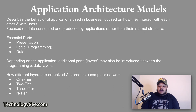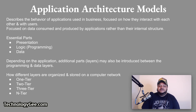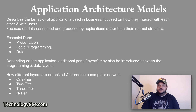Application architecture models: application architecture describes the behaviors of applications used in business, focused on how they interact with each other and with users. It is focused on the data consumed and produced by applications rather than their internal structure. The essential parts of an application include: the presentation layer — the application's user interface where you see the menus and aesthetics; the logic or programming layer — which takes input from the presentation layer and uses it to create or manage data; and the data layer — the information created and used by the application. Additional layers may also be introduced between the programming and data layers.